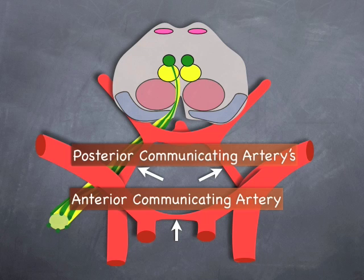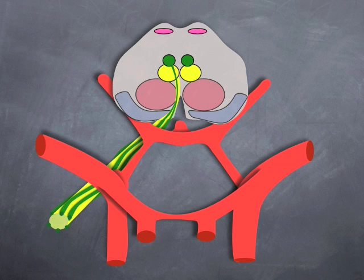Posterior communicating artery aneurysms occur at the origin of the artery from the internal carotid and compress the adjacent oculomotor nerve, especially upon rupture with subarachnoid hemorrhage. The patient presents with severe headache, reduced consciousness, neck stiffness, and vomiting.